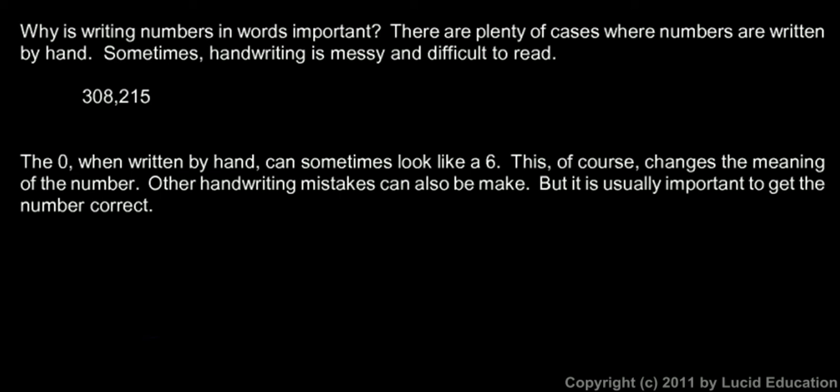Sometimes handwriting is messy. Look at this number: 308,215. What if it was written like this? Look at the second digit here. It's not entirely clear whether that's a zero or a six. And that's just the nature of human handwriting. Not everybody writes everything perfectly every time. And there are plenty of cases when this would matter.